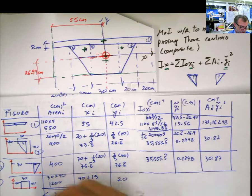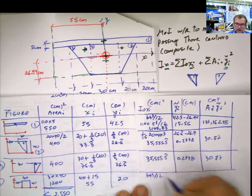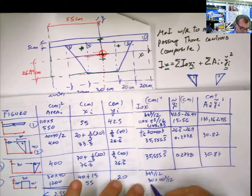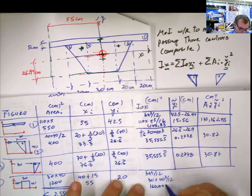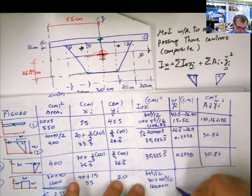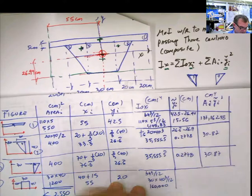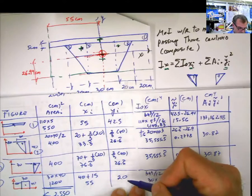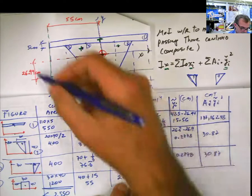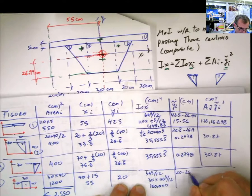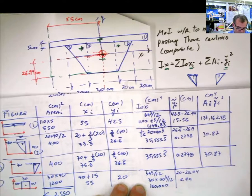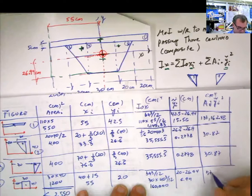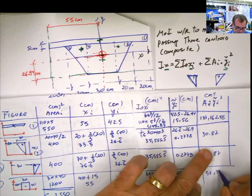For figure 4, this is another rectangle, so the centroidal moment of inertia is bh³ divided by 12. With b = 30 and h = 40, that gives 30 times 40³ divided by 12, which equals 160,000 centimeters to the fourth. The wiggly y is the distance between the centroid of figure 4 — at 20 from the base — and the composite centroid at 26.94. So 20 minus 26.94 equals 6.94, and 6.94² times area 1,200 gives 57,796.3 centimeters to the fourth.